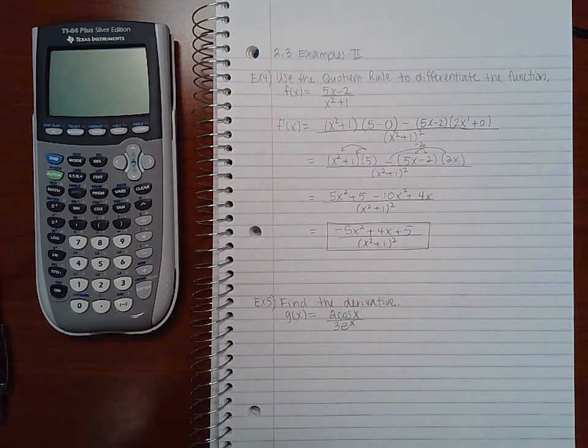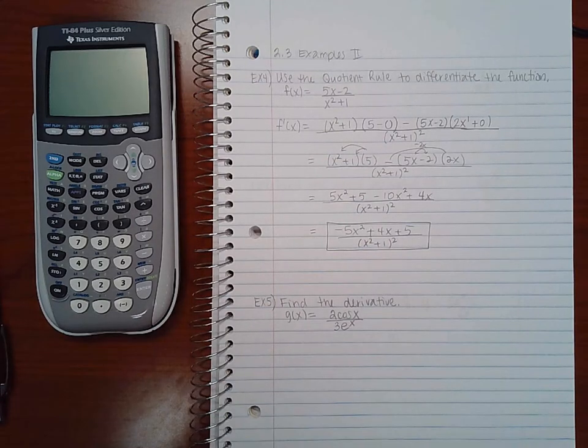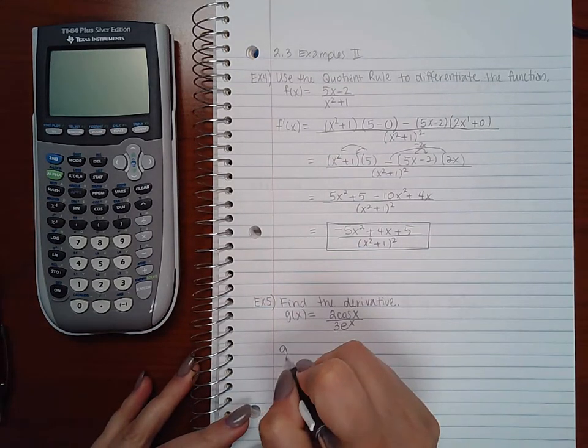Now for example 5, again, we have a fraction here. So we're going to have to do the quotient rule again.